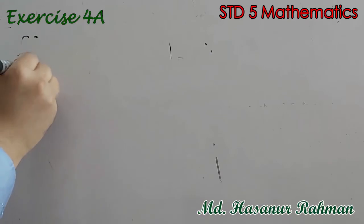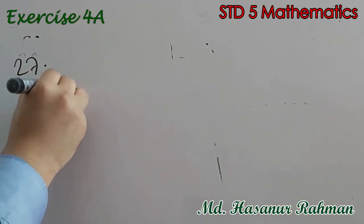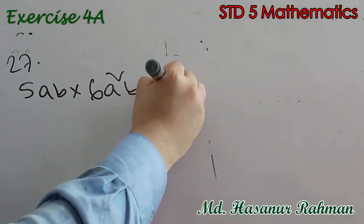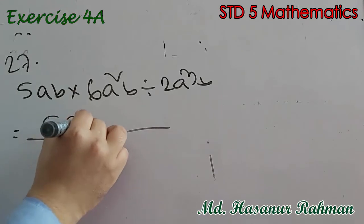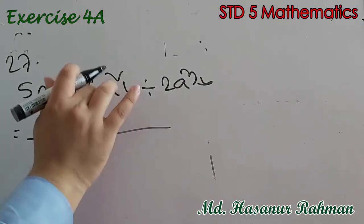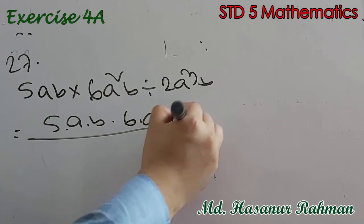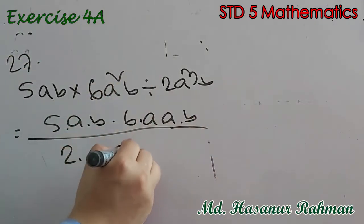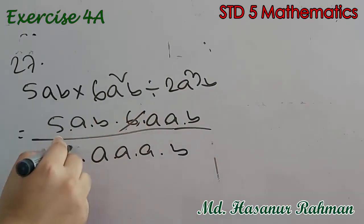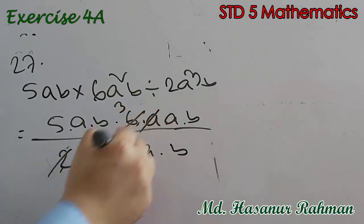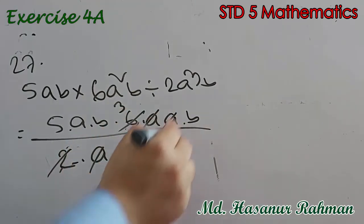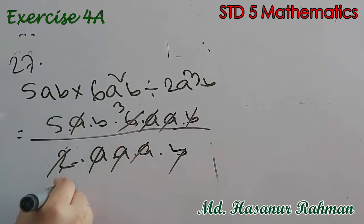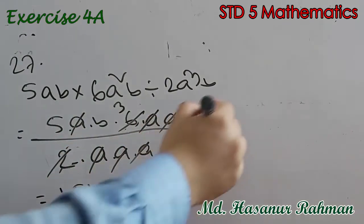Number 27 says 5ab into 6a squared b divided by 2a cubed b. Expanding: 5 into a into b into 6 into a into a into b, divided by 2 into a into a into a into b. 30 divided by 2 is 15. Cancelling the a's and b's, we are left with 15b. So 15b is our answer.